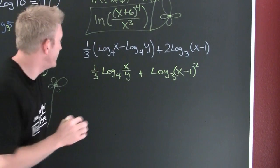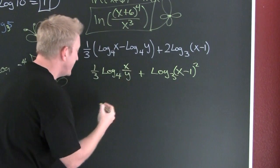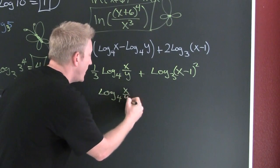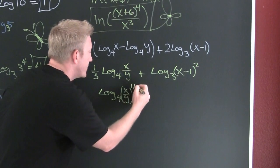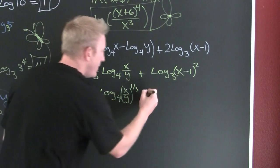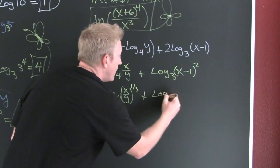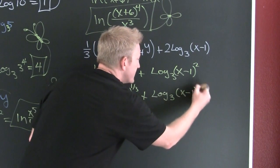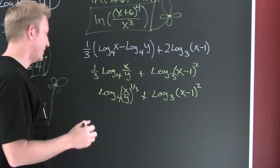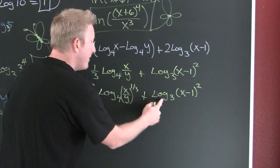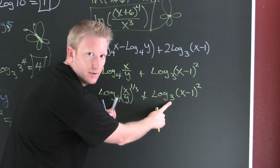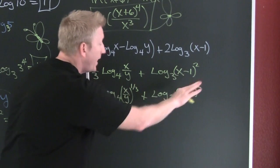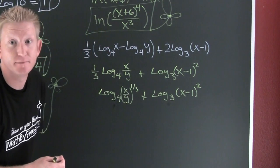But wait, there's more. Let me bring that one third here. This is the log base four of x over y to the third power. Plus log base three of x minus one squared. Now I have the sum of the logs. But I can't combine them because my bases aren't the same. So I like offspring. I got to keep them separated.